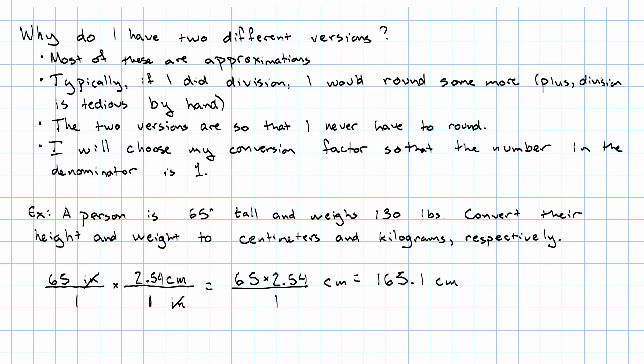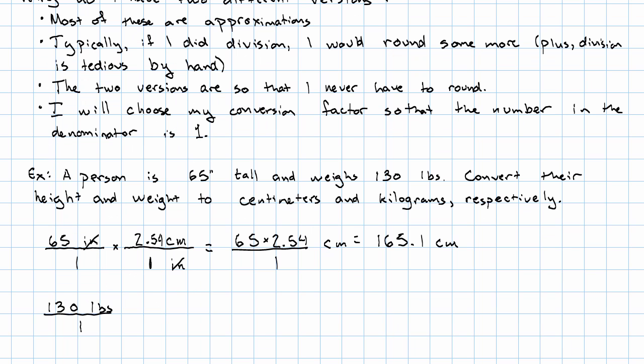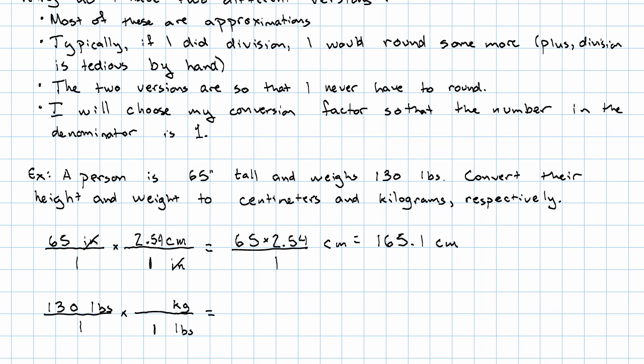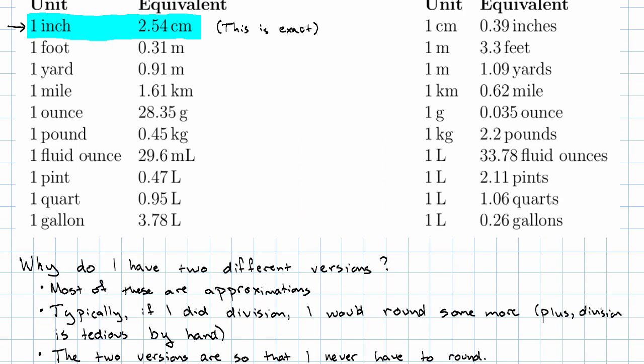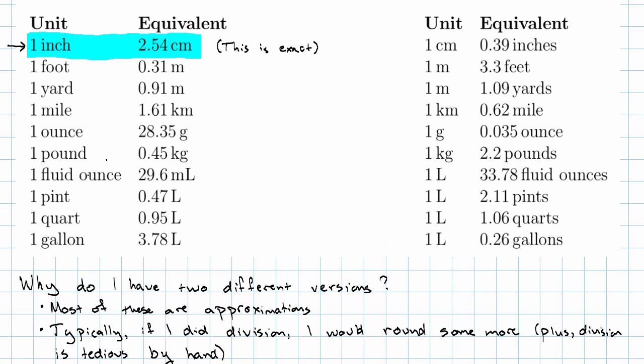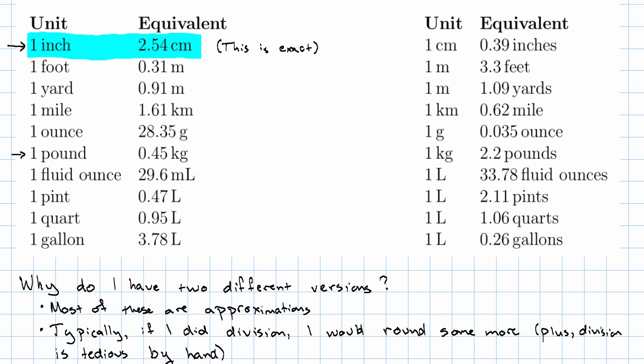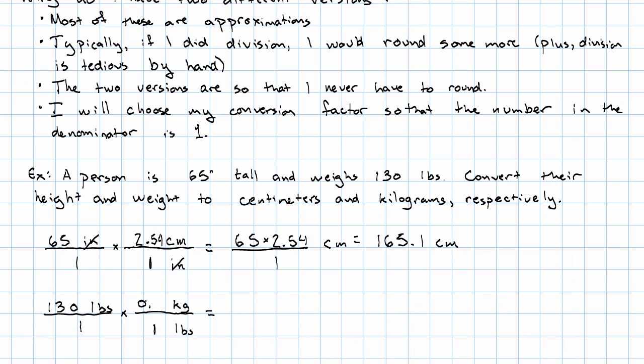Next, weight to kilograms. I have 130 pounds over 1. I want a conversion factor with pounds in the denominator and kilograms in the numerator. And I want to choose it so that the number in the denominator is a 1. Looking at my table again, pounds, kilograms, 1 pound is 0.45 kilograms. I'll have 0.45 in the numerator.